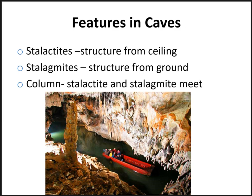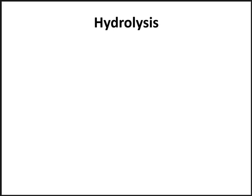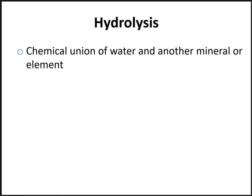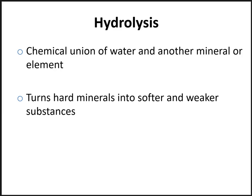The final type of chemical weathering is hydrolysis — the chemical union of water with another mineral or element in the rock, leading to a change in the structure of that rock. In turn, a very hard mineral becomes a much softer, weaker substance. For example, feldspar is attacked by water in the hydrolysis process and creates a very weak clay.